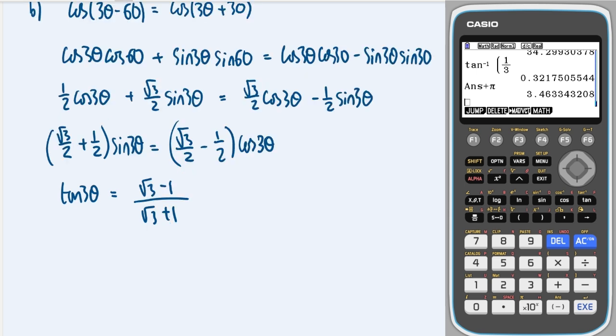Okay, now we take the inverse tan of that. So I'm going to need my calculator for this. We will do shift tan of (√3 - 1) over (√3 + 1). And we get 1/12 π.